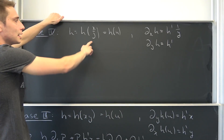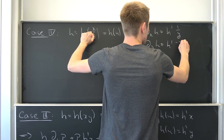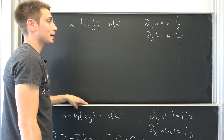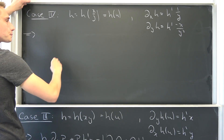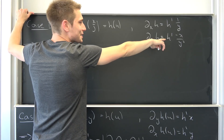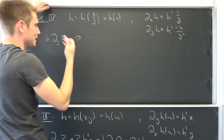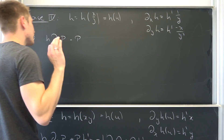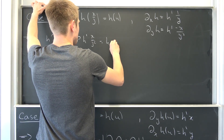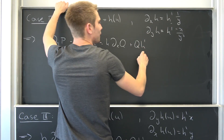And differentiating u with respect to y: the x stays fixed, and differentiating y to the negative one gives negative x over y squared. So del_y of H is H prime times (negative x over y squared). Plugging all of this in, we get: H times del_y P plus P times del_y H (which is negative H prime times x over y squared) equals H times del_x Q plus Q times H prime times one over y.